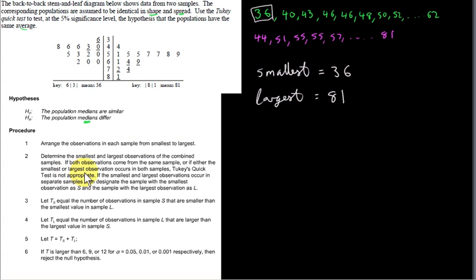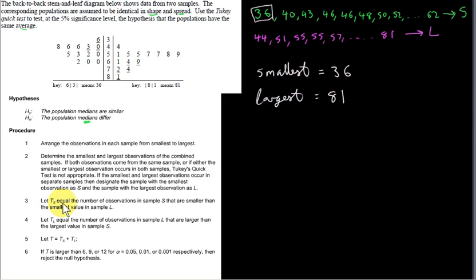We designate the sample containing the smallest observation as S, and the sample containing the largest observation as L. So sample S contains 36 and sample L contains 81. Step three is to let TS equal the number of observations in sample S that are smaller than the smallest value in sample L.